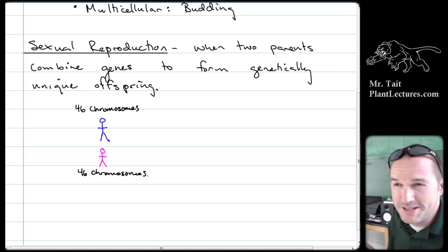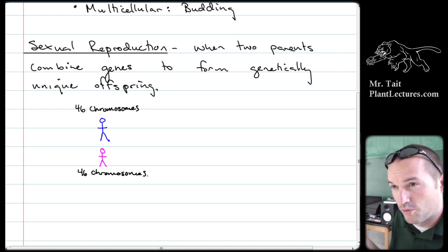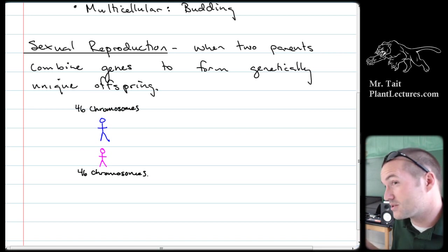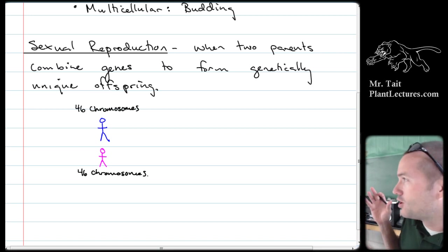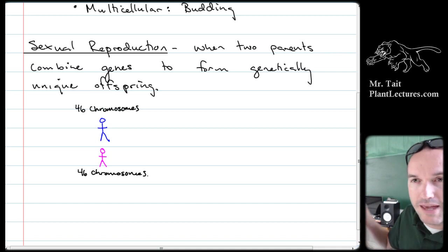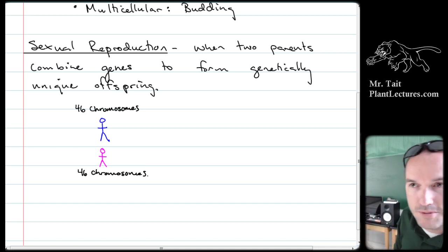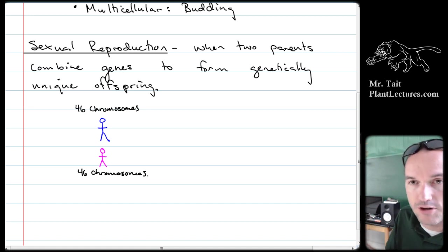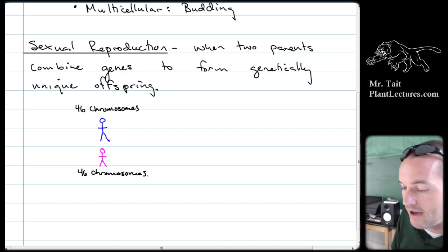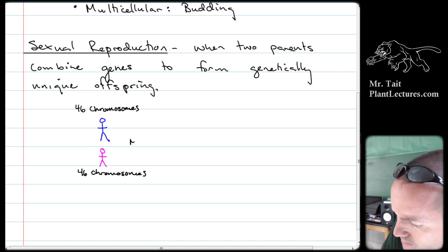We obviously can't double our chromosome number every generation. So what we have to do is cut the chromosome number in half first. The process that does that is called meiosis. Through meiosis, we go from having 46 chromosomes to cells that contain 23 chromosomes.